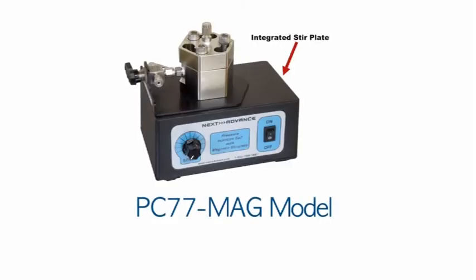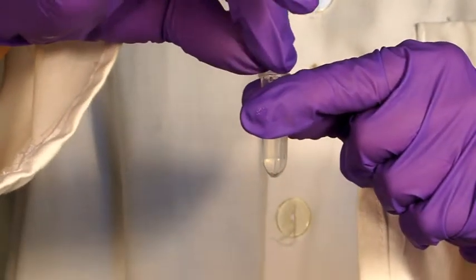If you are using the PC77 MAG model pressure injection cell with the integrated stir plate, or if you are using the pressure cell on top of your own stir plate, place the stir bar into the liquid prior to replacing the top.